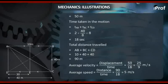Average speed equal to distance upon time equal to 90 upon 18 equal to 5 meter per second.